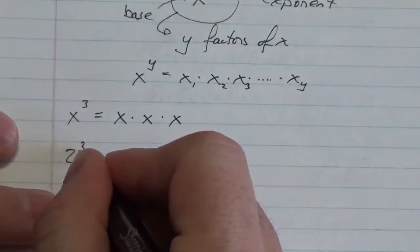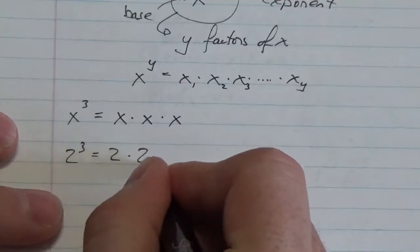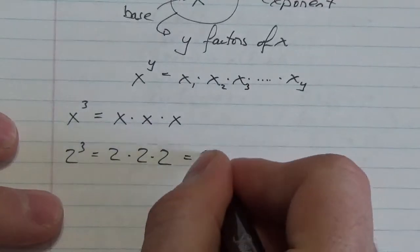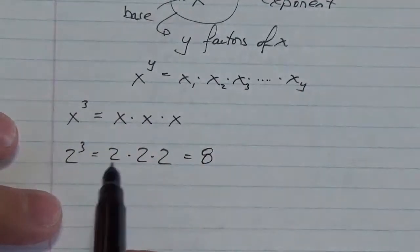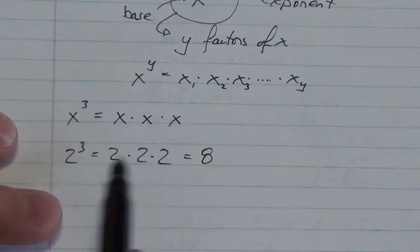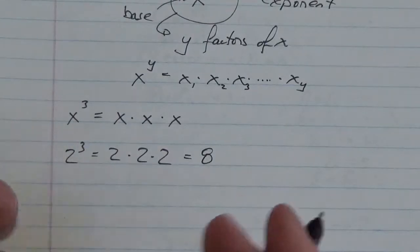So this is x multiplied by x multiplied by x - not a problem. Let's get more specific here: what if it was 2 cubed? Well, I know that that's 2 times 2 times 2, and I know that that's going to be equivalent to 8. So I can do something with this once I have a value in the base and a value in the exponent.